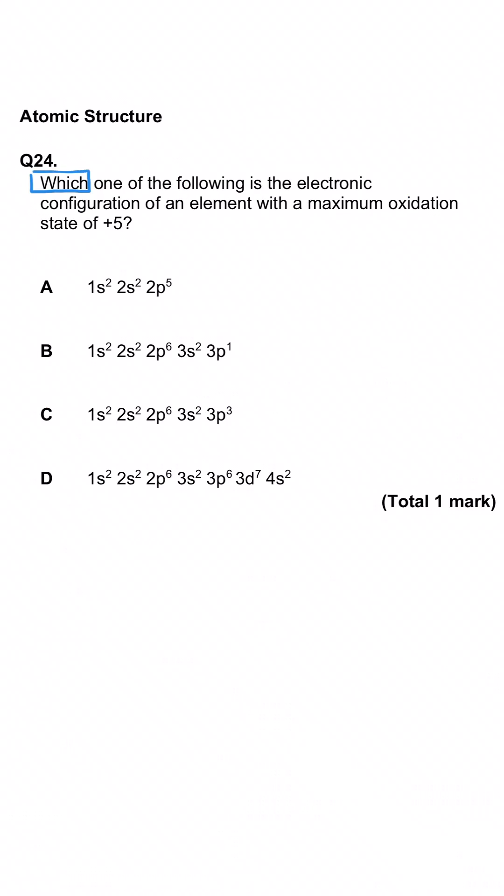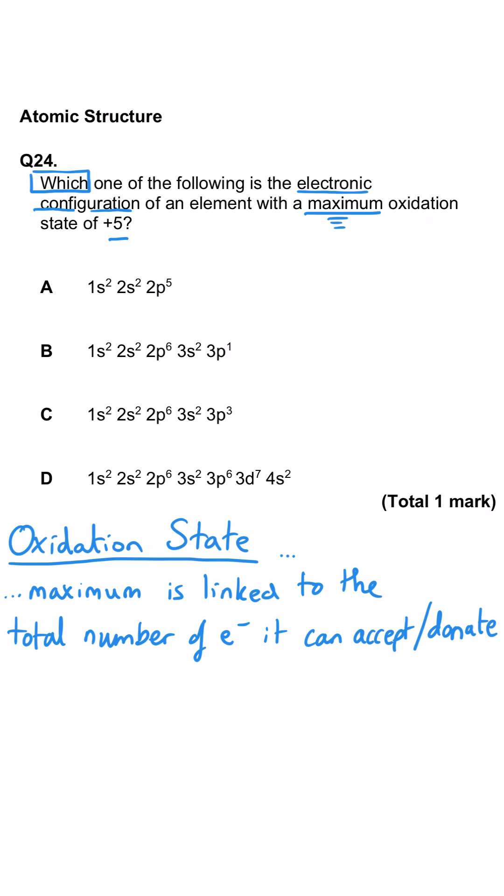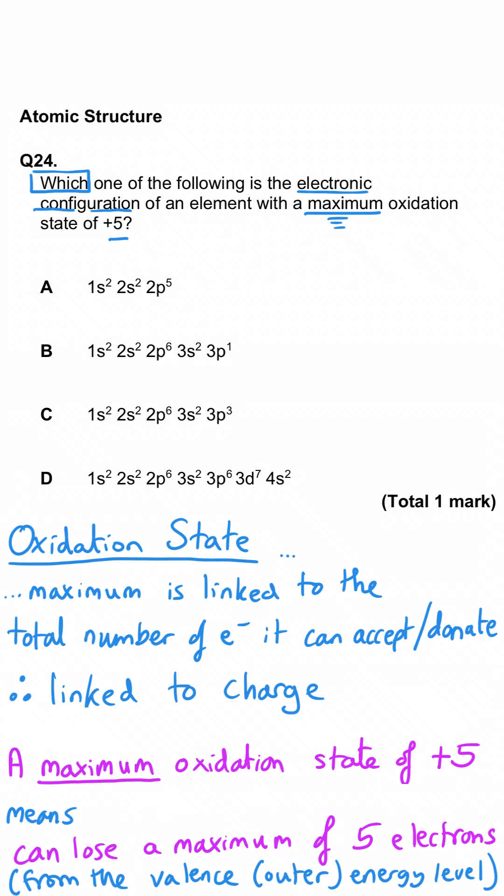This question asks us which of the following electron configurations of an element has a maximum oxidation state of plus 5. Now oxidation state is linked to charge so really this question is asking us which of these could lose a maximum of 5 electrons from its outer energy level to become stable. So A has actually got 7 electrons in its outer energy level so technically it could lose 7 electrons and that would give it plus 7. So A is wrong.